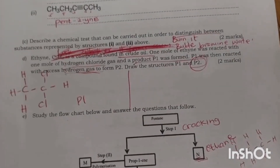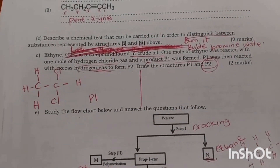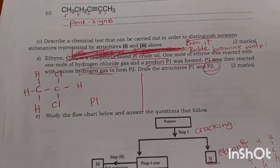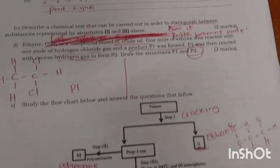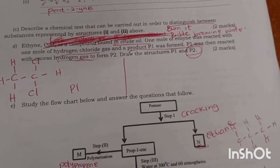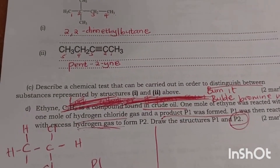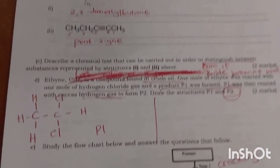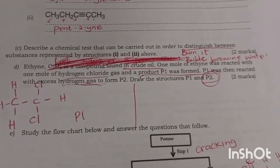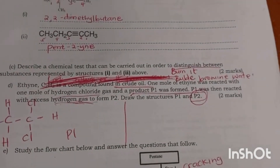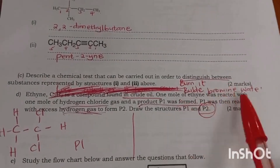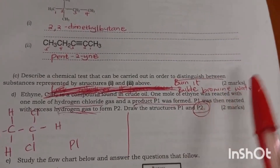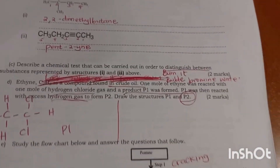Describe the chemical test that can be carried out to distinguish the substances in one and two above. It's an alkane and an alkyne — you can bubble through bromine water, or you can burn it and observe how it reacts.